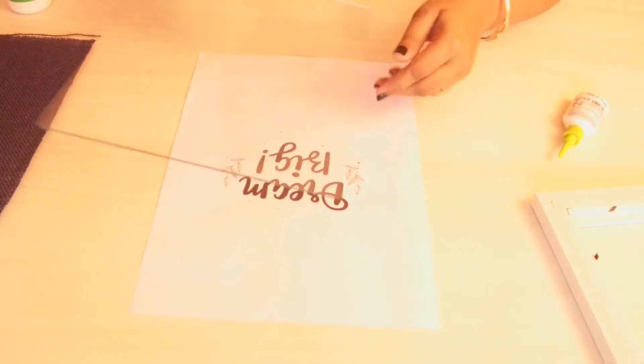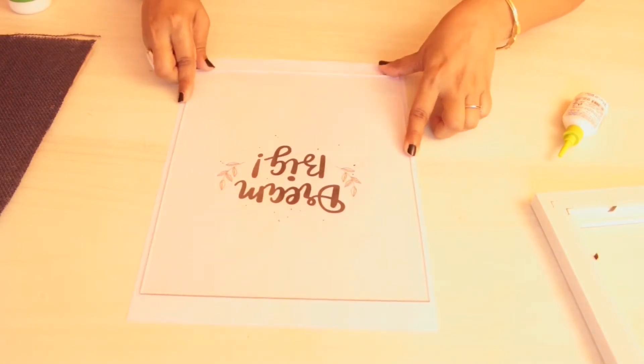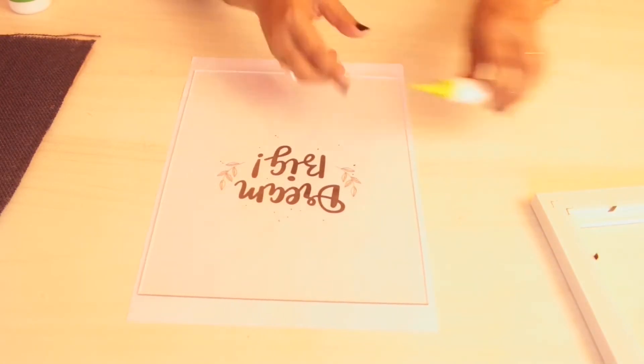Now take a print of whatever you want on the glass. Like here I have taken a dream big printout. Set the glass properly on the printout, make sure that it's not twisted. I am using a 3D liner here to write on the glass.